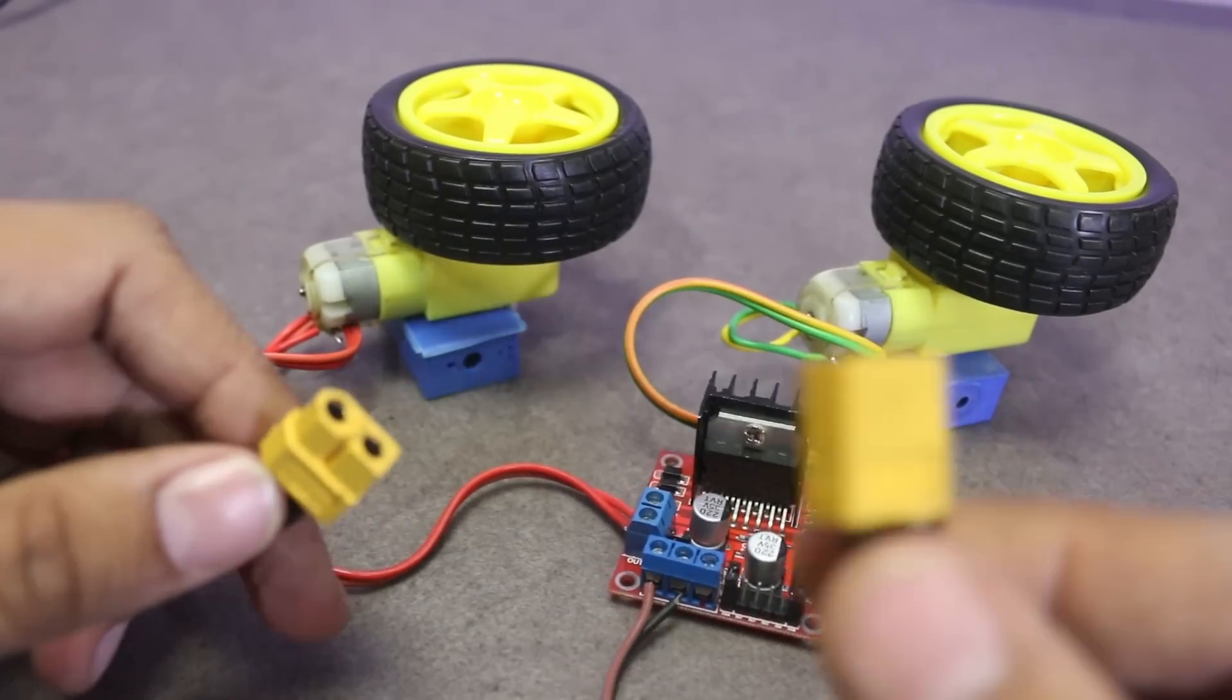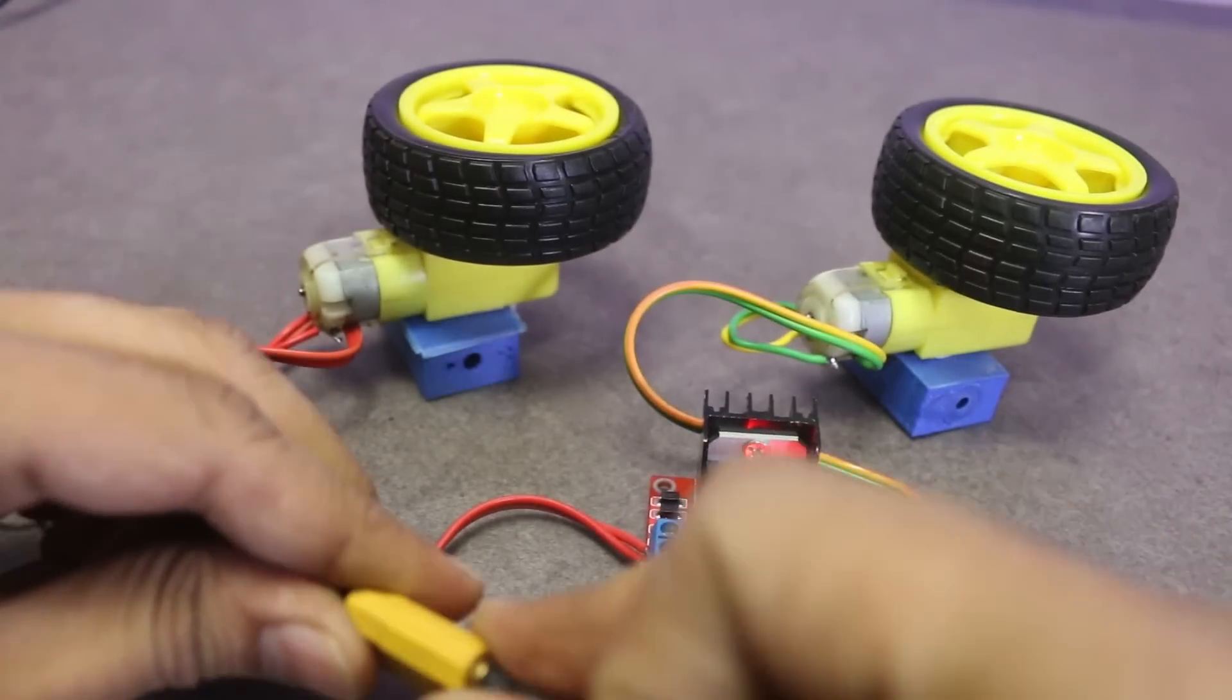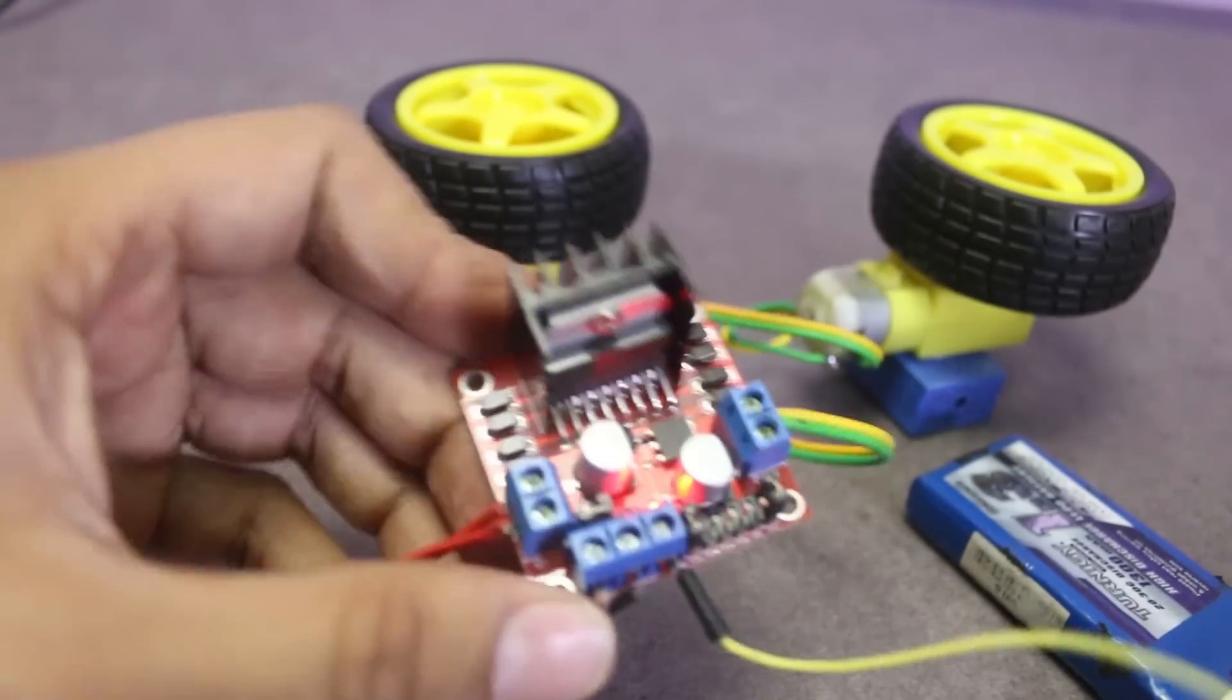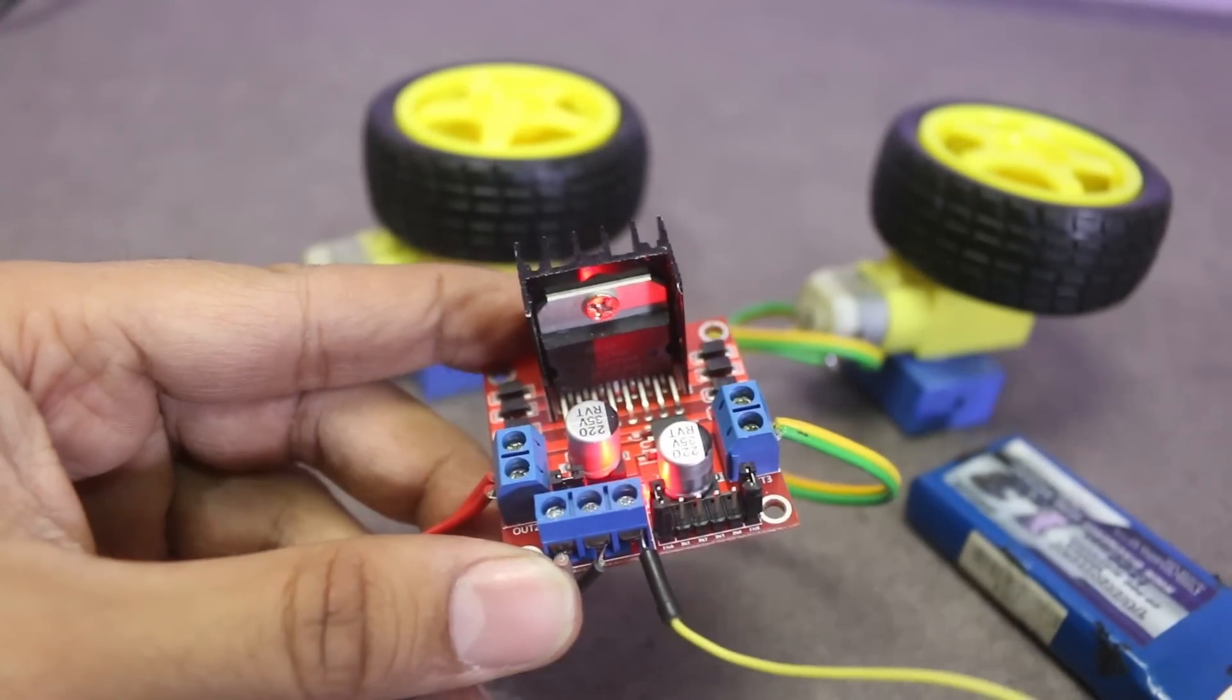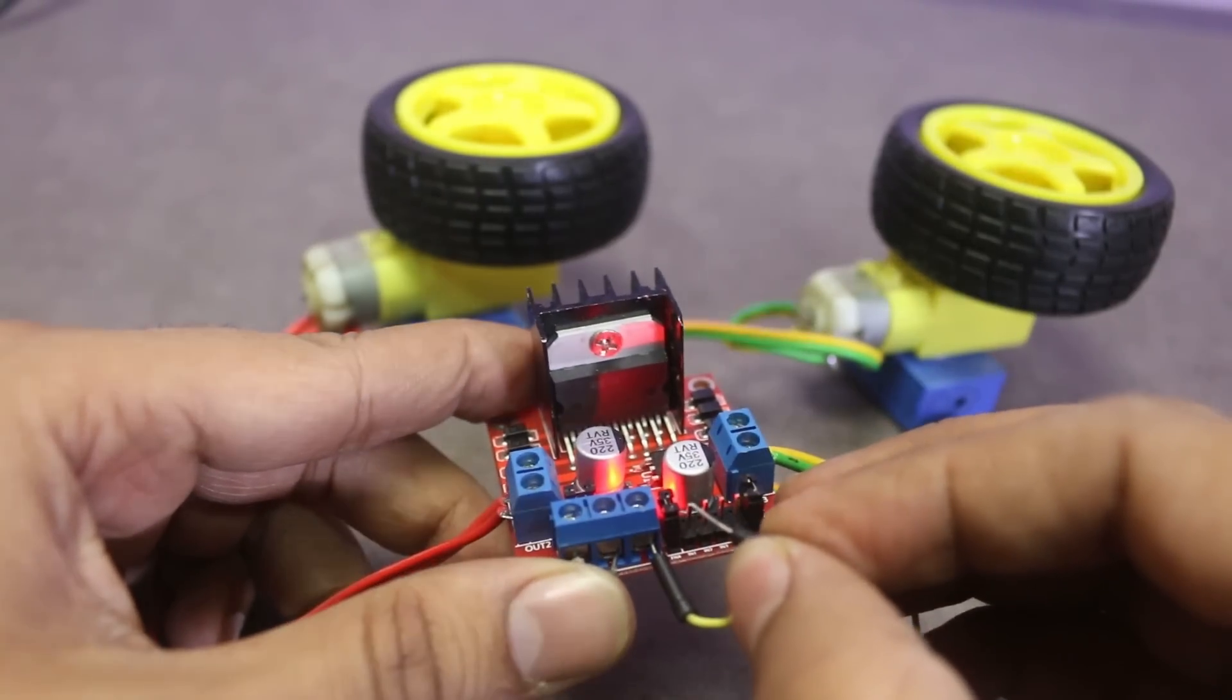Ok, before connecting the module to the Arduino, let's test it manually. Connect the jumper wire with 5V output. Ok, now I am going to set input 1 high by giving 5V on this pin. See, motor is started to run.